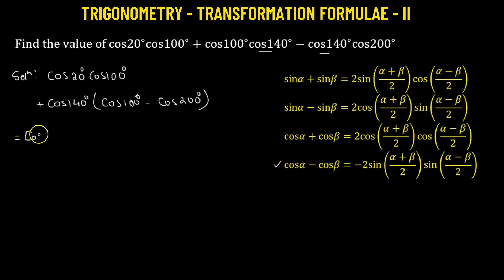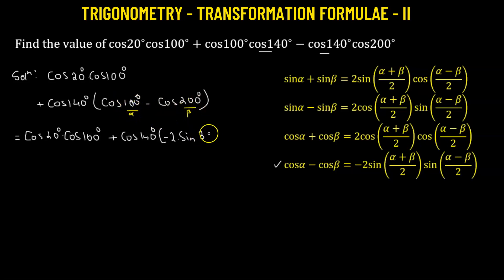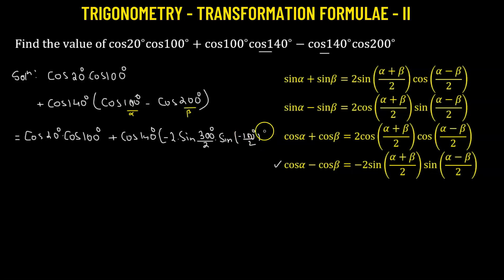We get cosine 20° multiplied by cosine 100°, plus cosine 140°. For the transformation, we use negative 2 times sine of angle. We set α equal to 100 and β equal to 200, so α plus β gives 300, meaning 300/2 = 150°. Then α minus β over 2 gives 100 minus 200 = negative 100, divided by 2 gives negative 50°.